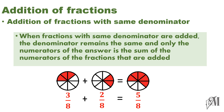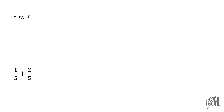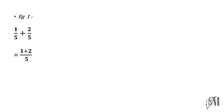Let's look into some more examples. 1 over 5 plus 2 over 5. Here, the denominators are both 5. So, in both the fractions, since the denominators are equal, nothing to worry. We just have to add the numerators. So, 1 plus 2 is 3. Therefore, the final answer is 3 over 5.